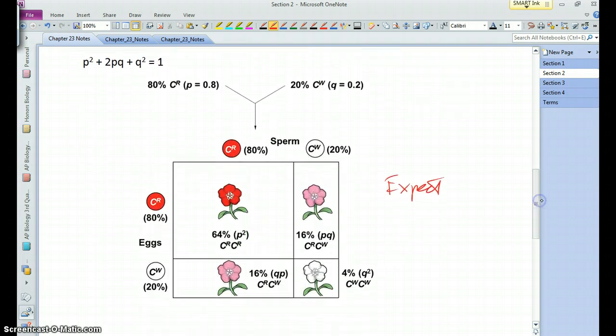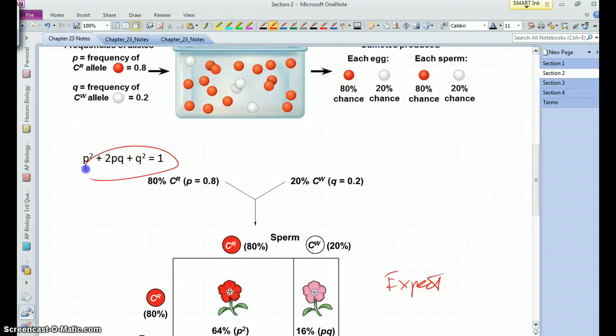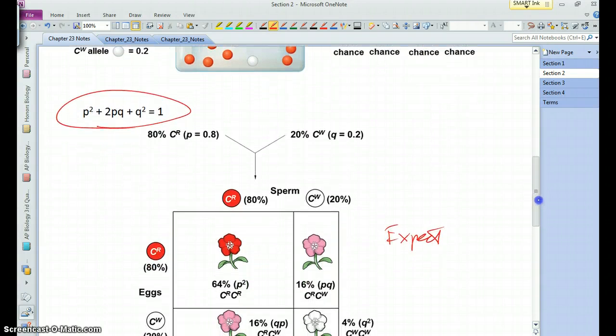And so that's what Hardy-Weinberg is essentially saying. If you know the allele frequencies in a population, you can calculate the genotype frequencies. And it's based, here it is, on this equation right here. p squared plus 2pq plus q squared equals 1.